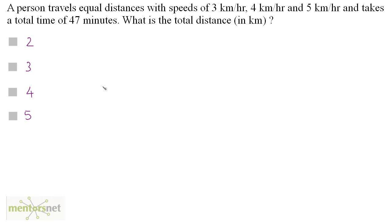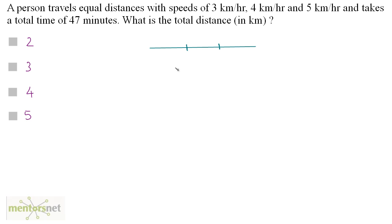A person travels equal distances with speeds of 3 km per hour, 4 km per hour and 5 km per hour and takes a total time of 47 minutes. What is the total distance in kilometers? This distance is divided into 3 equal parts. Let us assume that each part is x km long.